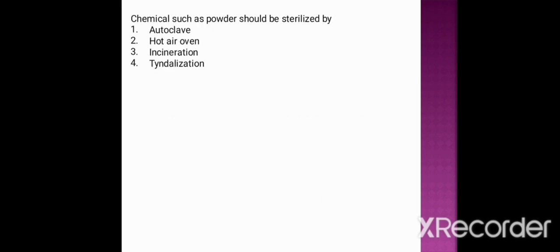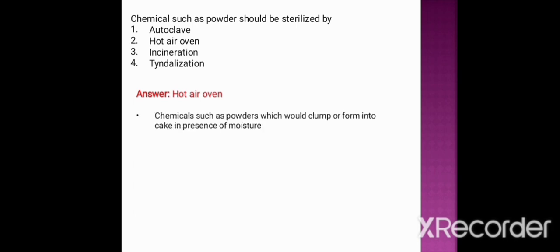Next question: chemicals such as powder should be sterilized by which method? Option one: autoclave. Option two: hot air oven. Option three: incineration. Option four: tindalization. The correct option is hot air oven. Chemicals such as powder would form into a cake or clump in the presence of moisture, so they should not be sterilized by moisture sterilization methods such as autoclave or tindalization.